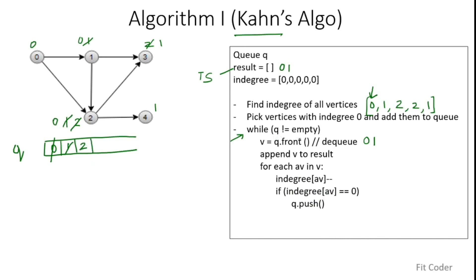We again enter the while loop. The front of the queue is 2, so we dequeue it and append it to the result. The adjacent vertices of 2 are 3 and 4. We decrement the indegree of 3 to 0, so we push 3 into the queue. Then we check vertex 4, which has indegree 1; we decrement it to 0, so we push 4 into the queue as well.